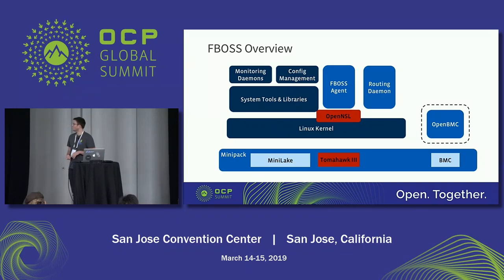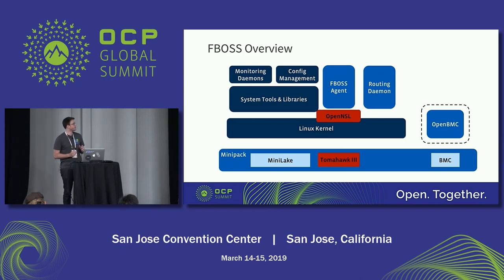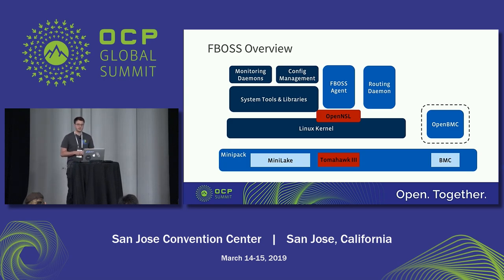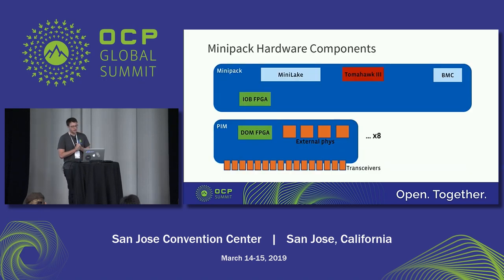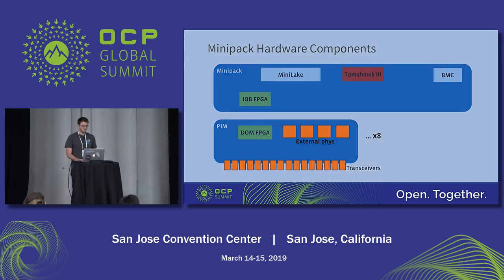Once we have a Facebook image booted, we need to support the modularity of this platform. Going back to the FBOSS block diagram, the components in the top half are largely untouched, but the bottom half has gotten much more complicated. The main elements we need to program are the external PHYs and the transceivers, with each component having precise settings based on which port it is, the type of PIM plugged in, and the speed we want to run.